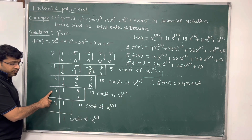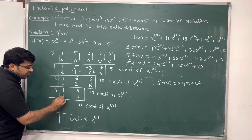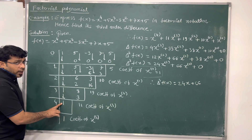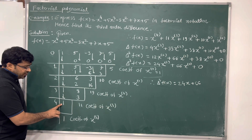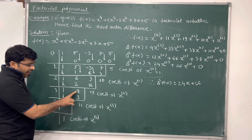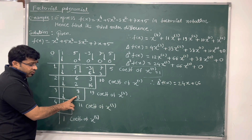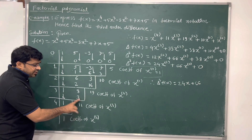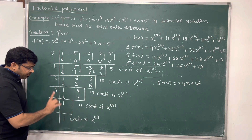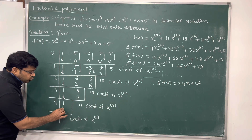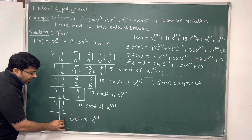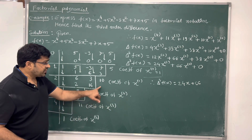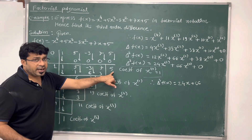Now dividing by 3. We write 1 down. Then 3 into 1 is 3. Addition of 8 plus 3 gives 11. We exclude this 11. Now dividing by 4, we write 1 down as it is.